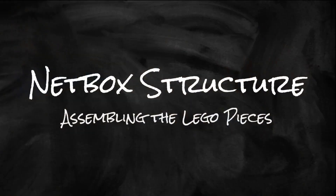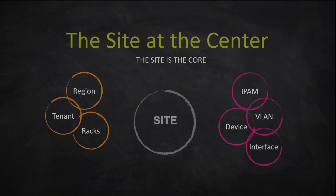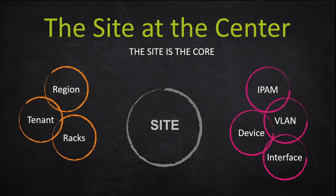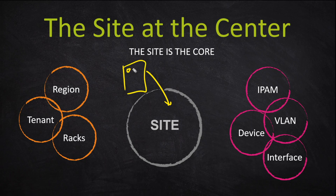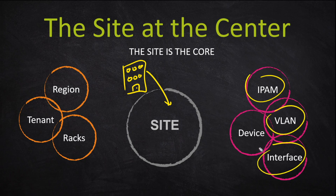It all starts with the NetBox site. The site is the center — the core of NetBox. A site can be used for many things, but the most traditional way is to use it exactly as it sounds: it's the location that contains the network equipment, IP address management, VLANs, interfaces — all of that stuff you're using NetBox to track. So one of the first things you should do in configuring NetBox is set up the site.